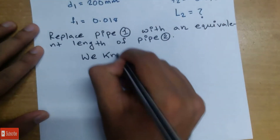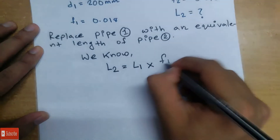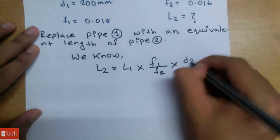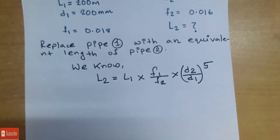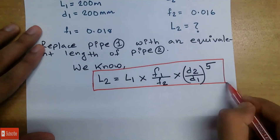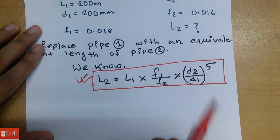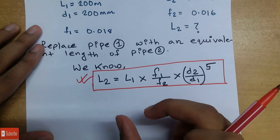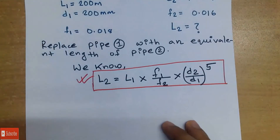We know that L2 equals L1 multiplied by (f1 divided by f2) multiplied by (d2 divided by d1) to the power of 5. This is the equivalent length formula. This length is equal to the result of this formula, and this is the most important data given.